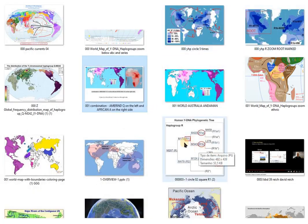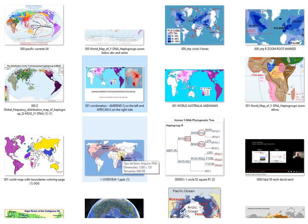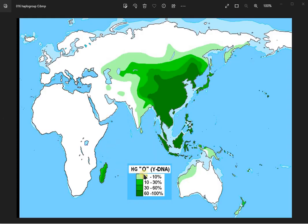So this map here is associated with R, and this represents an older migration. Haplogroup O is kind of a counterpart of R that invades and turns over Western Europe and Western Eurasia, and O does pretty much the same, at least in recent times, in Asia, Southeast Asia, Indonesia, and Madagascar.